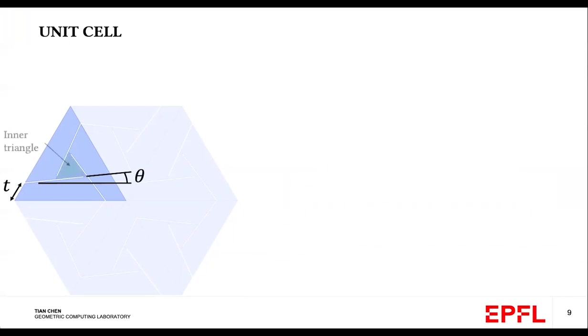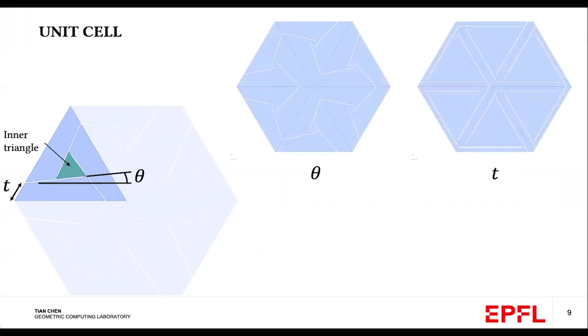Such a triangle can be parameterized using variables t and theta. Now let's pay attention to the size of the inner triangle. We note that with increasing theta, the size of the inner triangle decreases. Similarly, by increasing t, the size of the inner triangle also decreases.